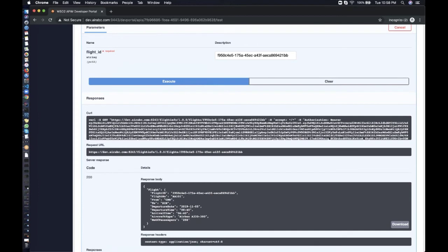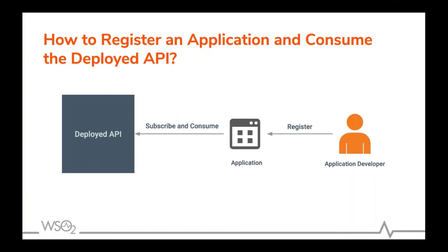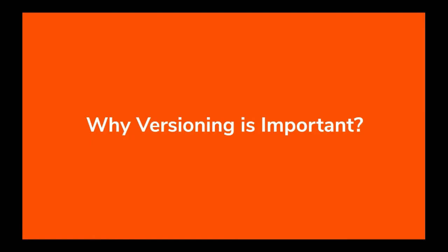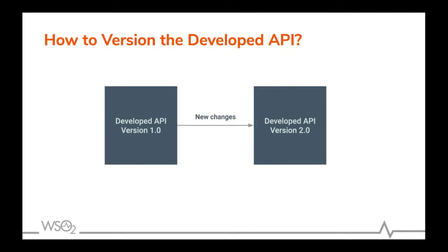This is the basic idea of how we can consume an API using the developer portal of API Manager. Next, we'll look at why versioning is important. Versioning is important when new changes or features are introduced to an existing service. For example, an API developer who wants to add new resources to the same API can introduce a new version. Let's look at how an API developer at AI ABC can version their APIs — we'll introduce a new version of the Flight Information API with a new resource.